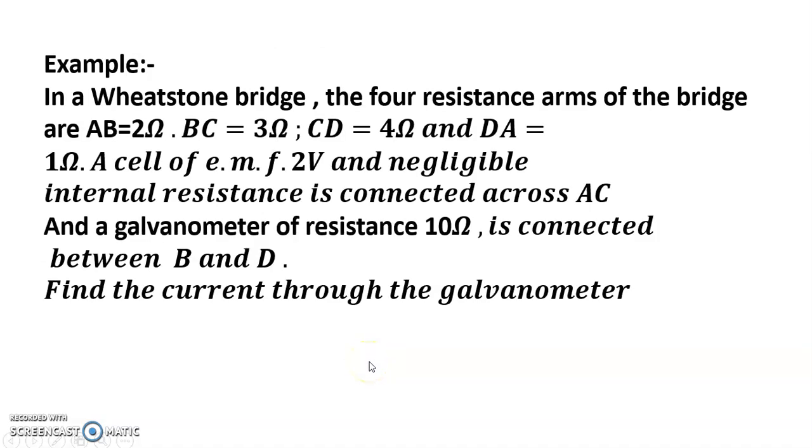In a Wheatstone bridge, the four resistance arms of the bridge are AB = 2Ω, BC = 3Ω, CD = 4Ω, DA = 1Ω. A cell of EMF 2V and negligible internal resistance is connected across AC, and a galvanometer of resistance 10Ω is connected between B and D. Find the current through the galvanometer.